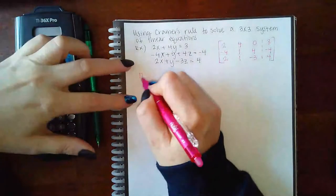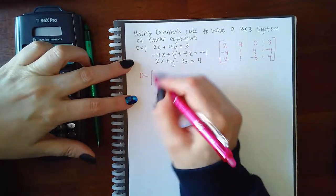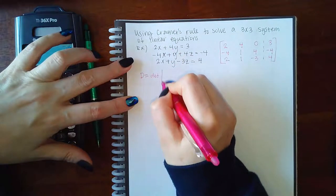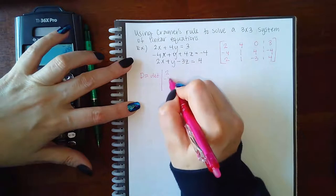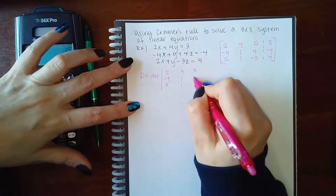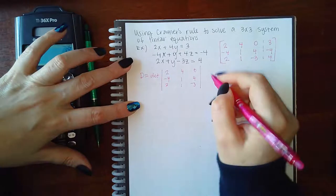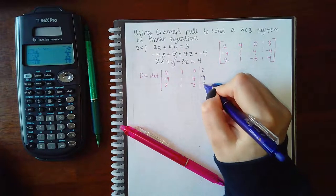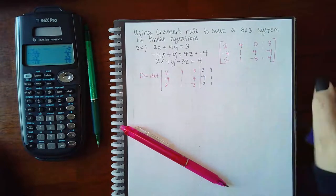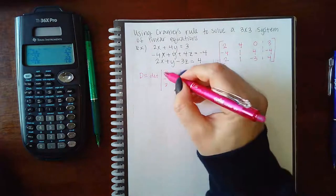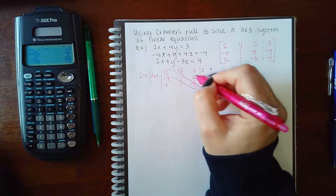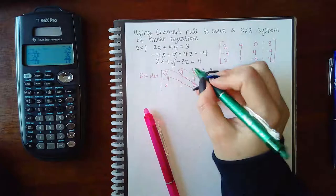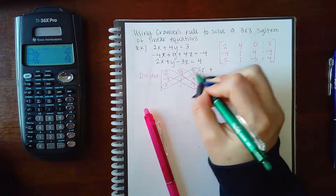And so D is just the coefficients all by themselves without the constants. So it's the determinant of this matrix here. And so in order for me to calculate that determinant, I am going to have to rewrite these first two columns and then do that method that we talked about. So this little determinant takes a little bit more effort, but it's still relatively easy than solving it using the matrices.